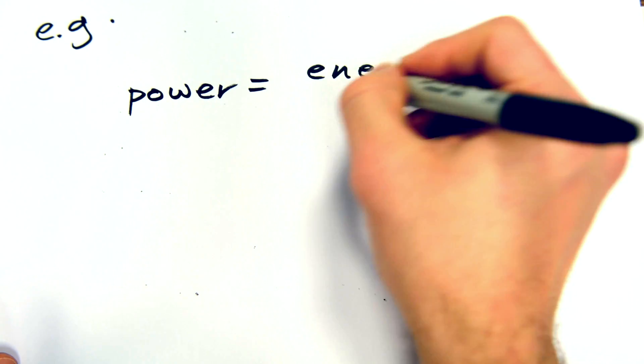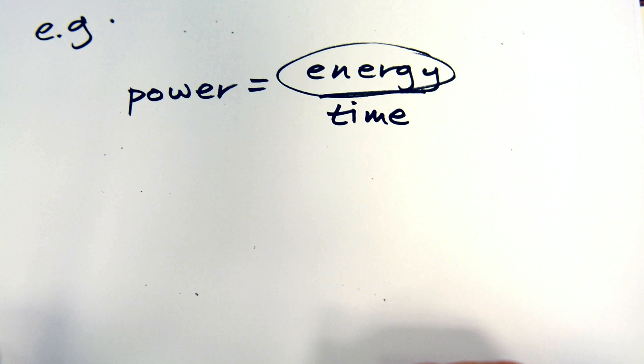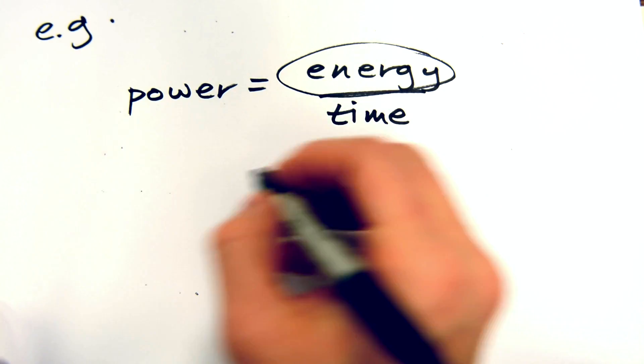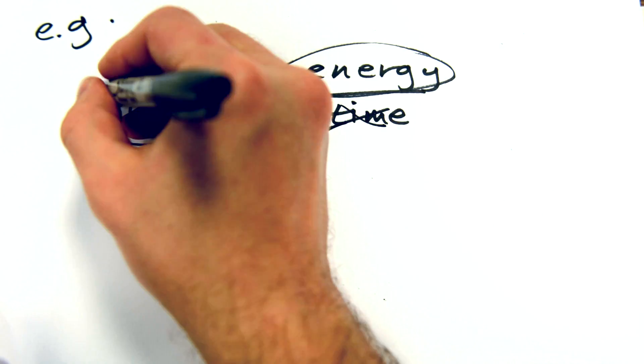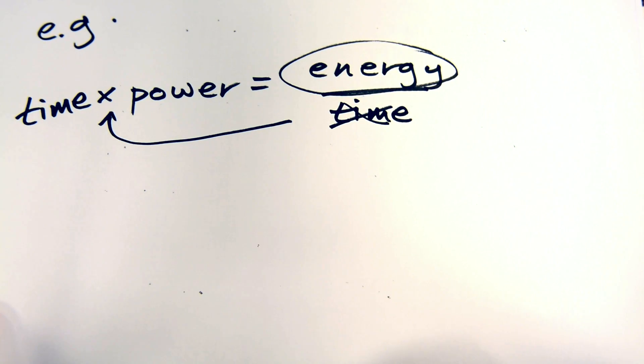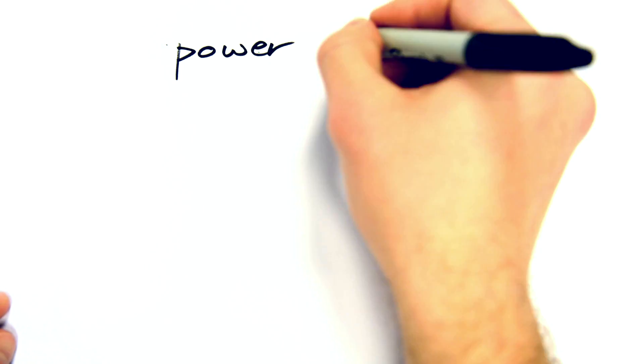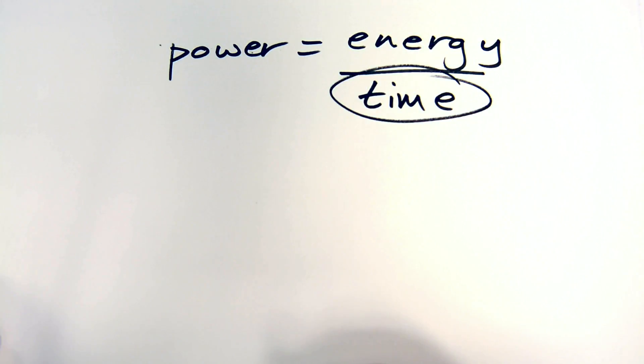For example, take the equation power equals energy divided by time. What if we have power and time, and we want to find energy? We need to get rid of time to the other side. As it's being divided by on the right-hand side, we just multiply by it on the left-hand side.